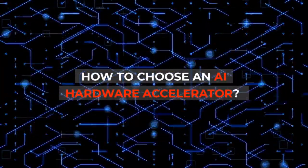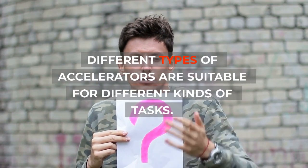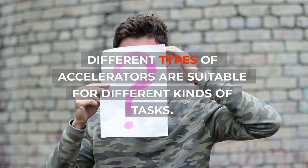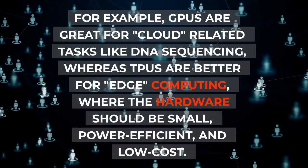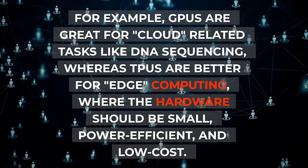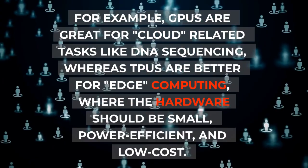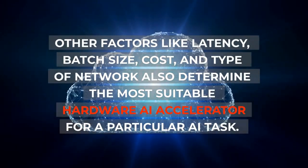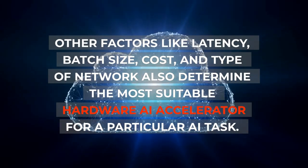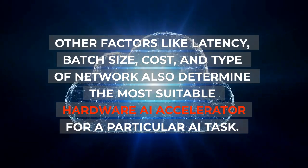There is no single correct answer to how to choose an AI hardware accelerator — different types are suitable for different kinds of tasks. For example, GPUs are great for cloud-related tasks like DNA sequencing, whereas TPUs are better for edge computing where the hardware should be small, power-efficient, and low-cost. Other factors like latency, batch size, cost, and type of network also determine the most suitable hardware AI accelerator for a particular task.